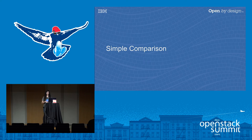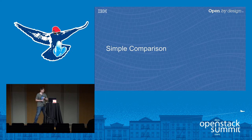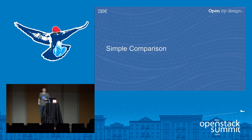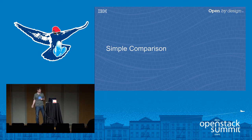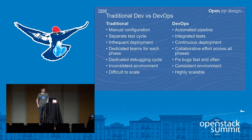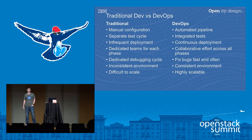I'm going to hand it over to Michael to take you through some of the details of DevOps. For DevOps, there are several important things, but first I'm going to show a comparison to a traditional form of development. In a traditional form, the first characteristic is manual configuration — you go into the environment and manually set everything up to your specifications each time. Another differentiating factor is a separate test cycle, where you go through development and then pass it off to a test team at the end.